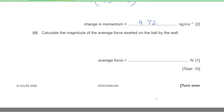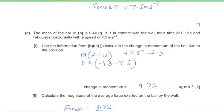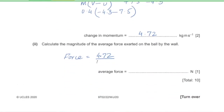Part 2: calculate the magnitude of the average force exerted on the ball by the wall. Force equals change in momentum divided by time: 4.72 / 0.12 = 39.3 N.